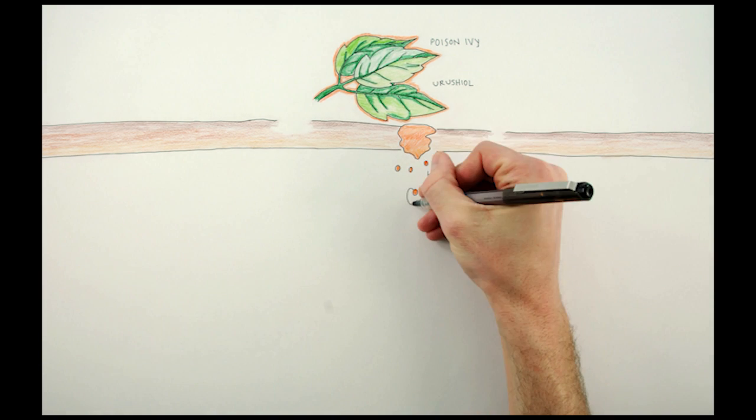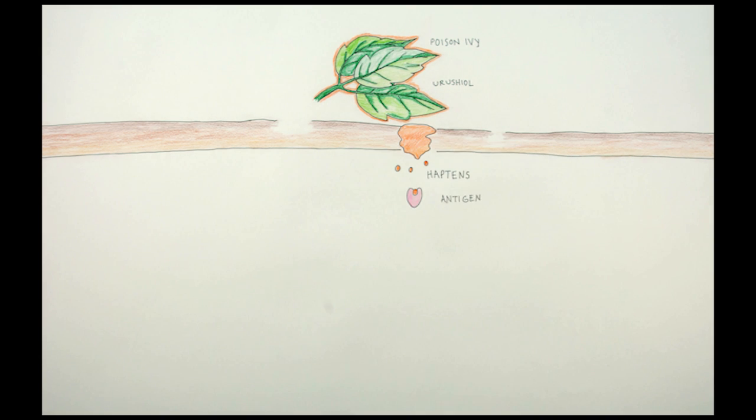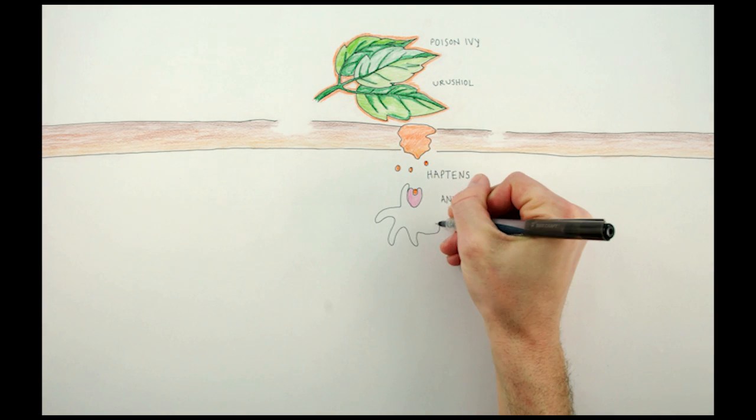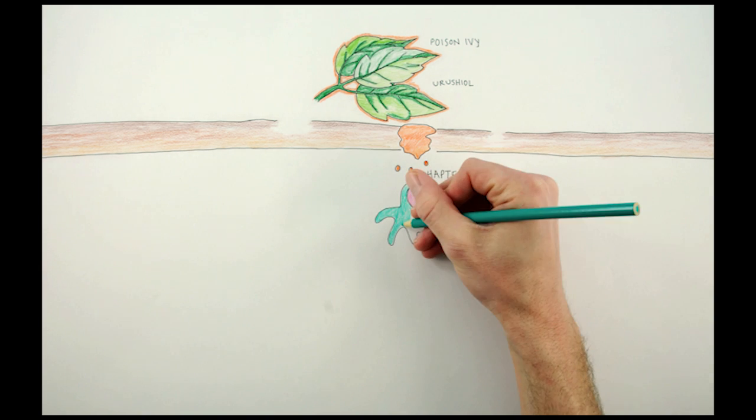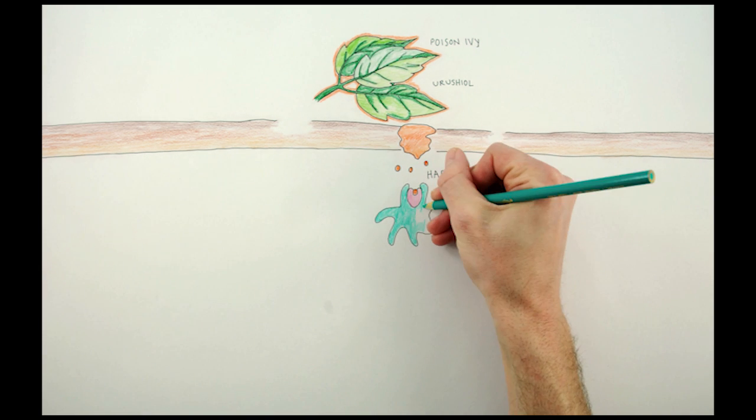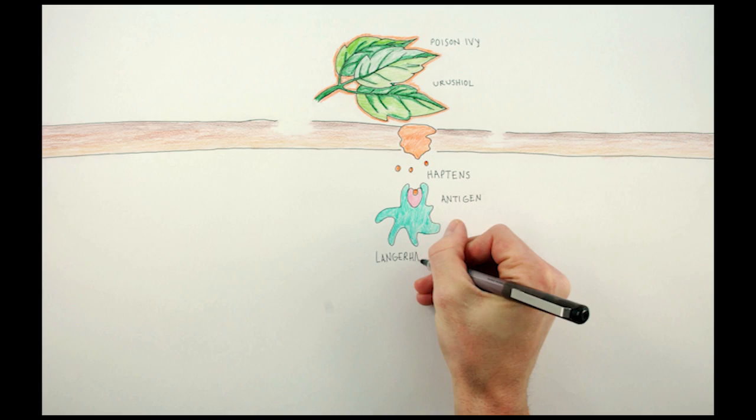They're really small and your body probably wouldn't think much of them, but they bind to skin proteins. An inquiring cell with octopus arms called Langerhans, or antigen-presenting cells (APC), grabs the protein with the poison ivy chemical because now it thinks the body is being invaded by a foreign substance.